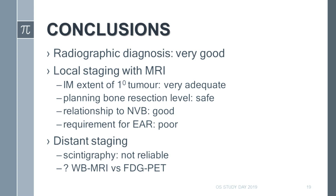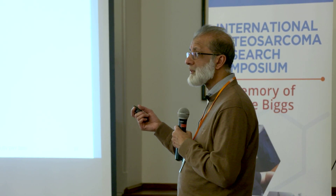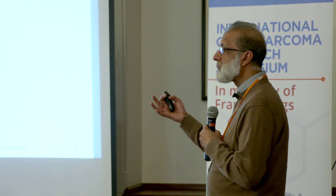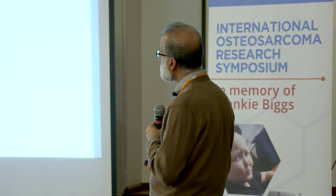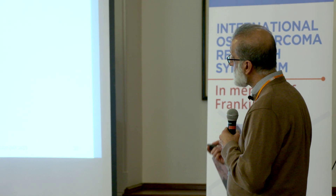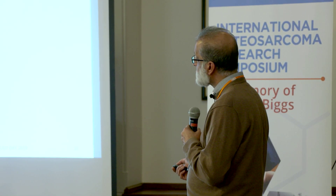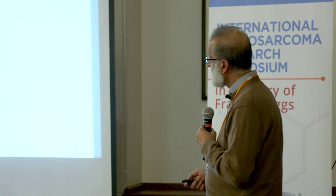In conclusion: we seem very good at making a basic radiographic diagnosis of osteosarcoma. Identification of intramedullary tumor extent, including skip metastases, appears very reliable on standard T1-weighted MR sequences. The relationship to the neurovascular bundle can be clearly determined, but how that feeds into local recurrence outcomes is something we need to look at. We need to improve our criteria for joint involvement in osteosarcoma, and we have to accept that scintigraphy is not reliable for skeletal staging. The question is whether we move to whole body MRI and/or FDG-PET.